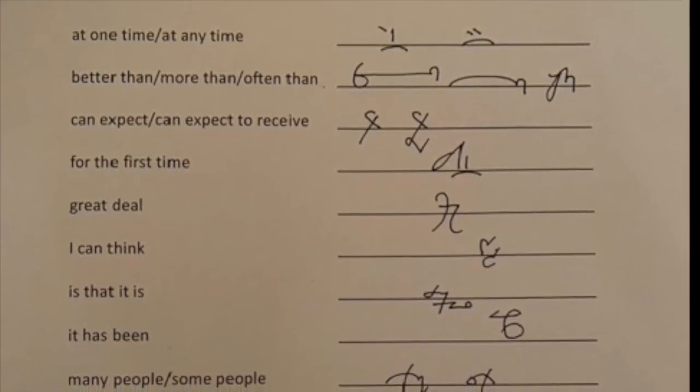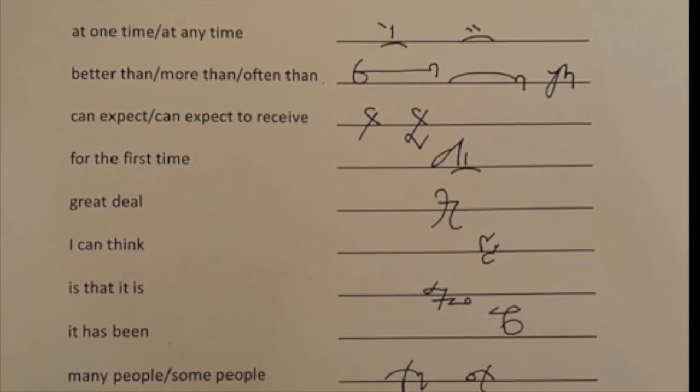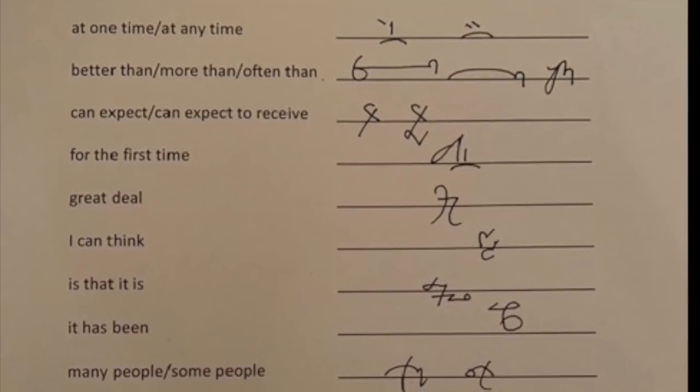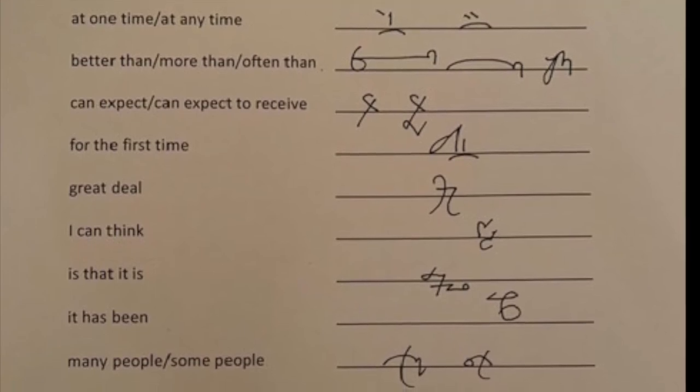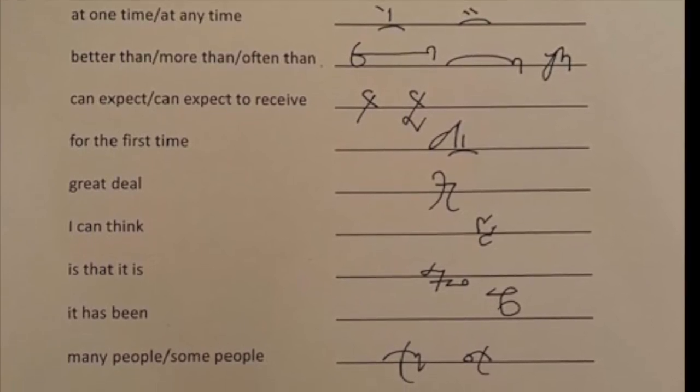CAN EXPECT. If you just slope the CN blend for CAN slightly, so that the P can cross it to make the XP, which is the special outline for EXPECT, we've got that word grouping.